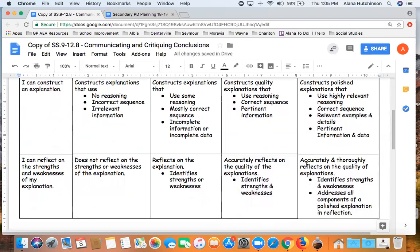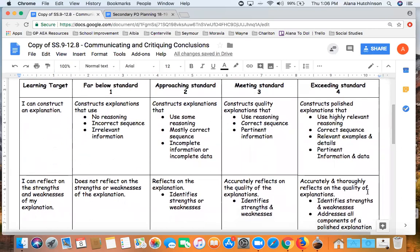With a four, I would be looking at that they're able to reflect on all of the elements of a polished explanation. So they're identifying the strengths and weaknesses of the different components. And they're able to even go back and polish their explanation more based on the reflection that they gave. So you'll notice that my rubrics are not terribly long. Again, this is a formative assessment. So it's to give students feedback and it helps guide your instruction on what your students need.